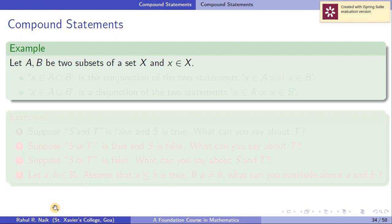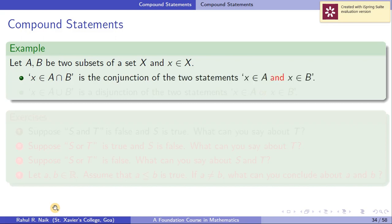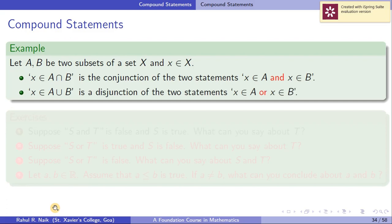Let A and B be two subsets of a universal set X, and let x be an element of X. X belongs to A ∩ B is a conjunction, meaning X belongs to A and X belongs to B. Similarly, X belongs to A ∪ B means X is either in A or in B (or both), which is written as 'X belongs to A or X belongs to B' — a disjunction of two statements.